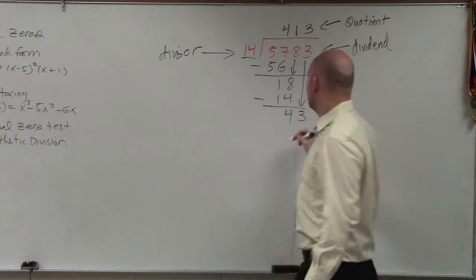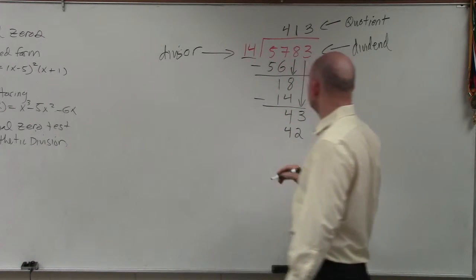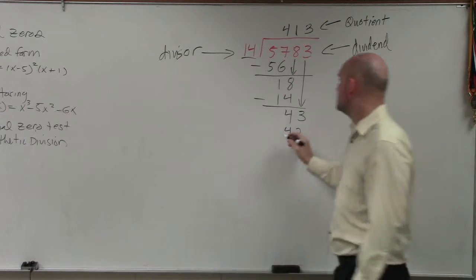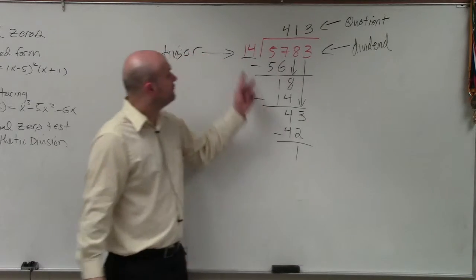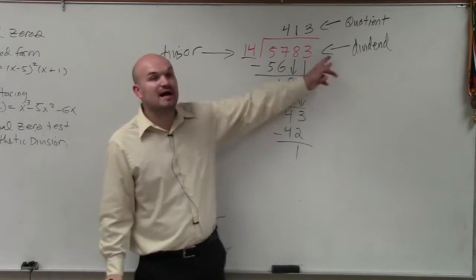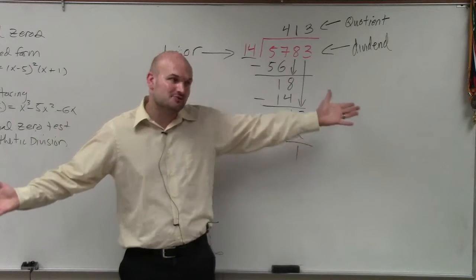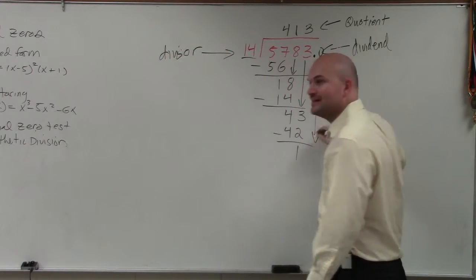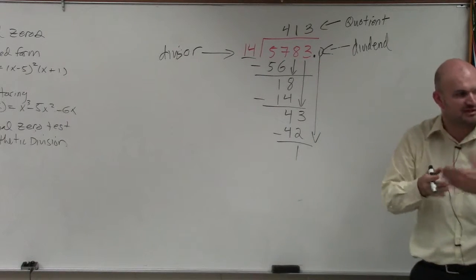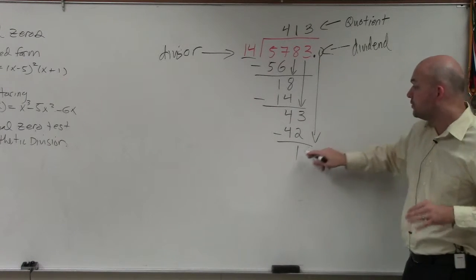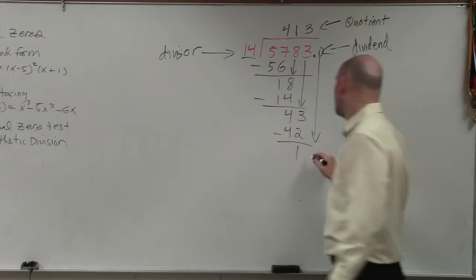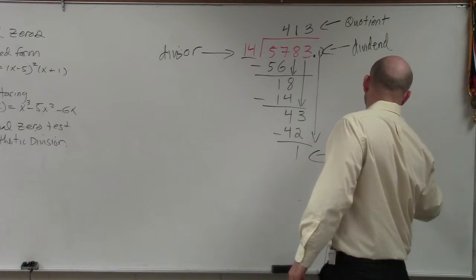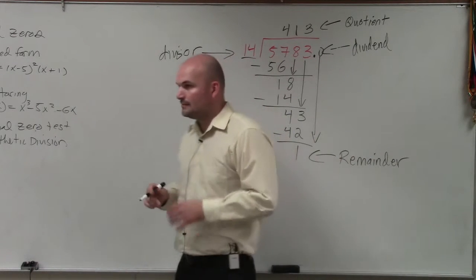3 times 14 is 42. Subtract the rows, that gives me 1. 14 does not divide into 1. I don't have any other place values. If you're doing math for college readiness, you would put a decimal point, add a 0, and bring that down for further division. But we're not concerned about decimals. We're concerned about this number, which we call the remainder.